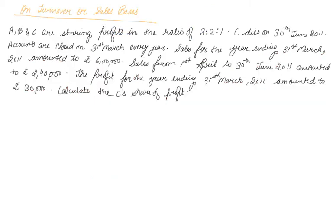Now we will study how to calculate the profit share on the turnover or sales basis. A, B, and C are sharing profits in the ratio of 3:2:1. C dies on 30th June 2011; accounts are closed on 31st March every year. Sales for the year ending 31st March were rupees 6 lakh. Sales from 1st April to 30th June amounted to rupees 2 lakh 40,000. The profit for the year ending 31st March 2011 amounted to rupees 30,000.